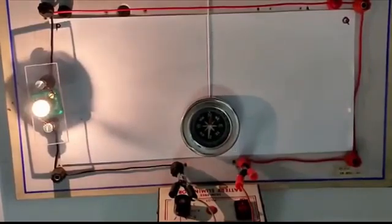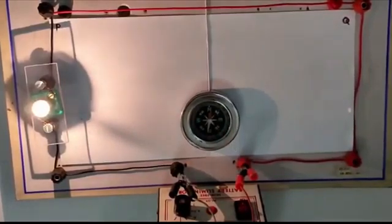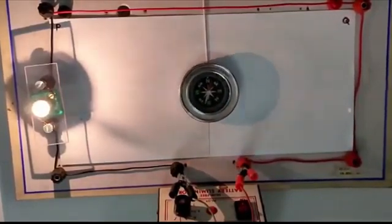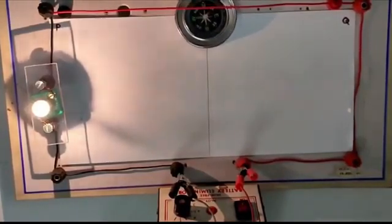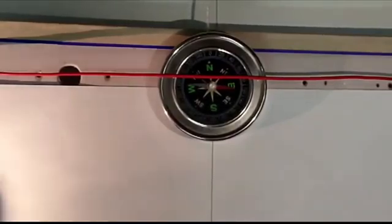In this fourth activity also the current is passing from point Q to point P but the magnetic needle is brought closer to the wire. Observe the deflection of red terminal of magnetic needle and note it down in table.